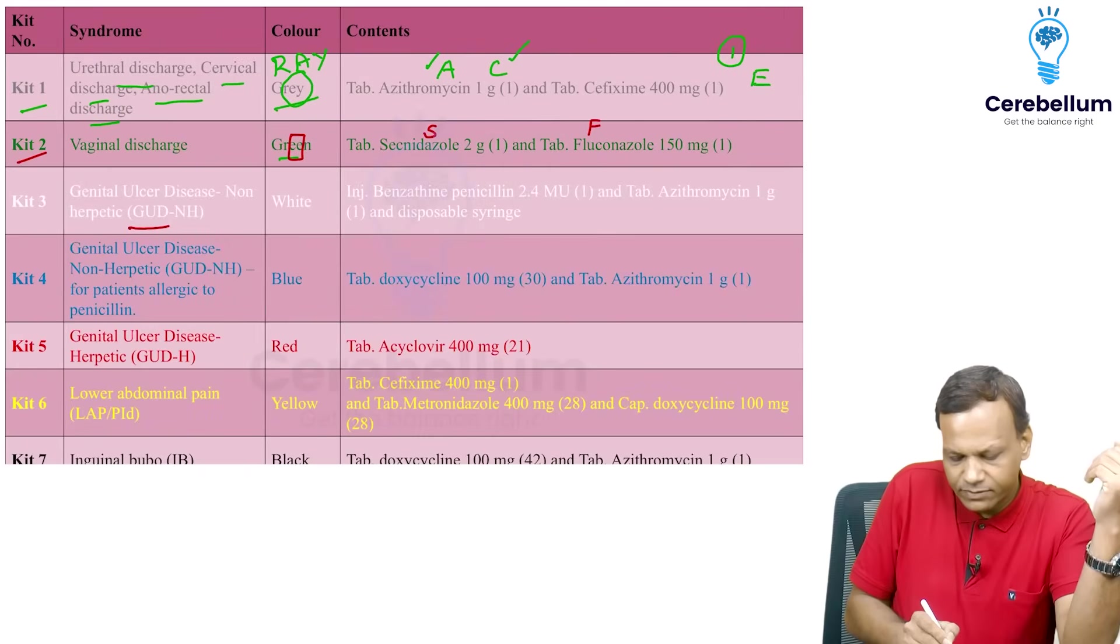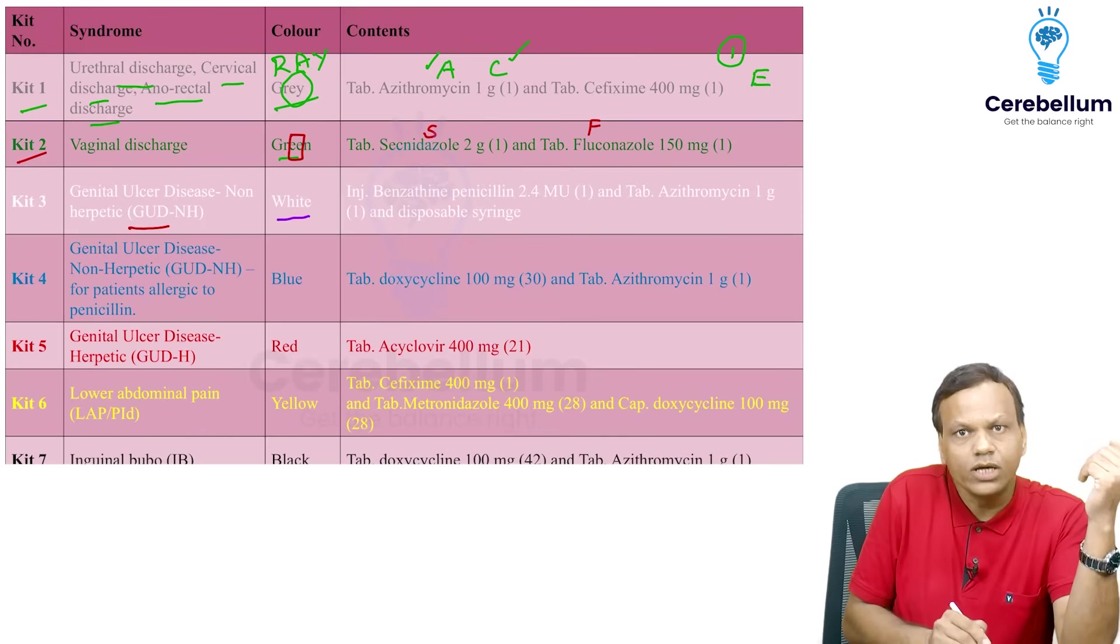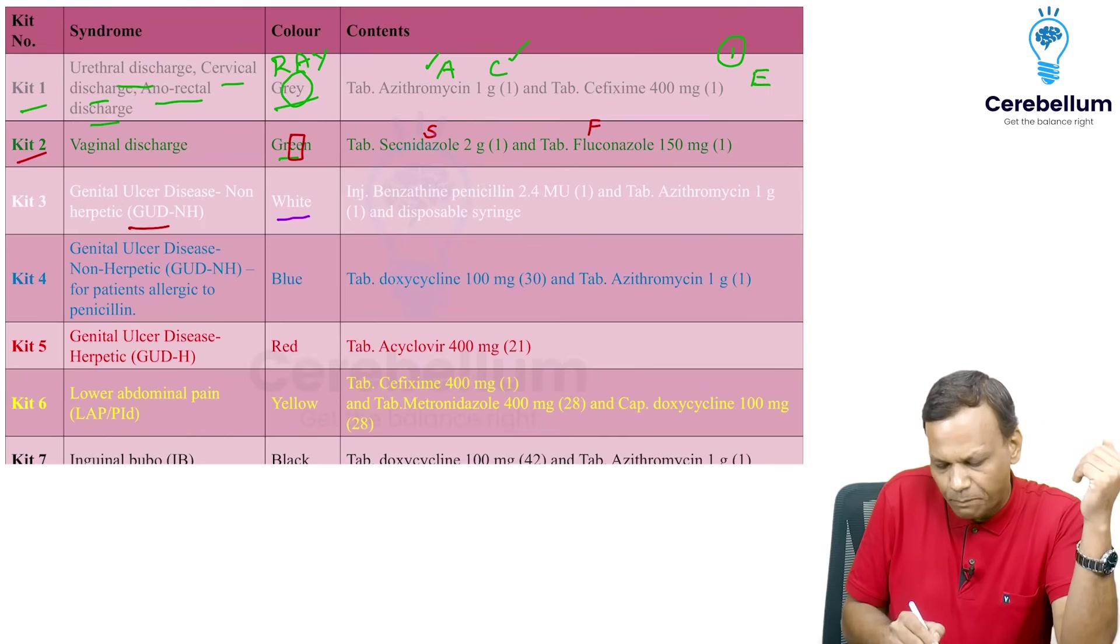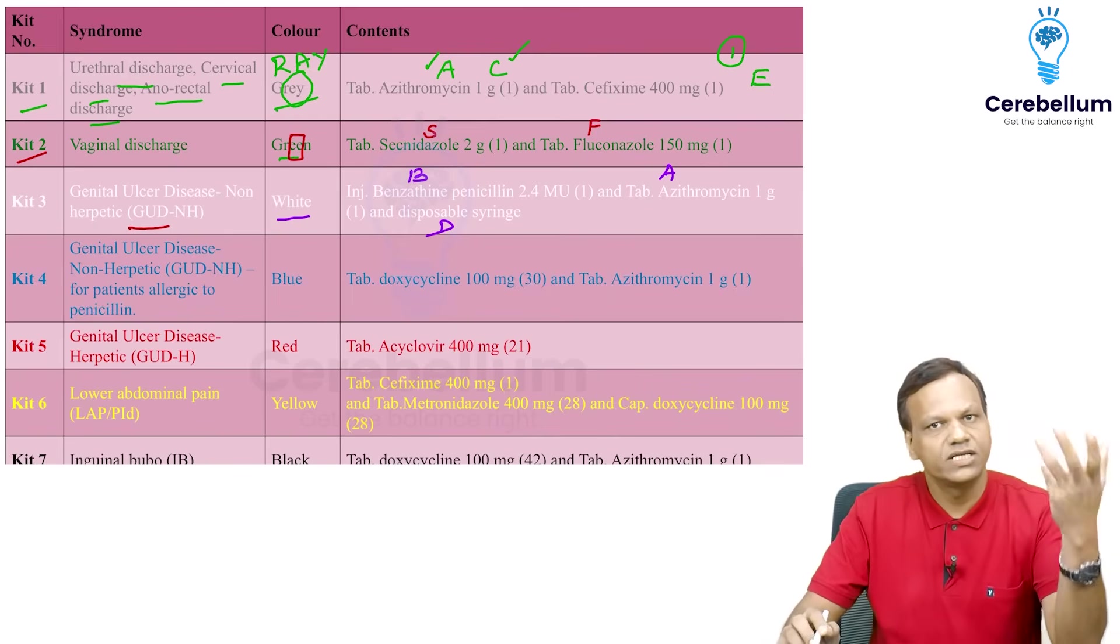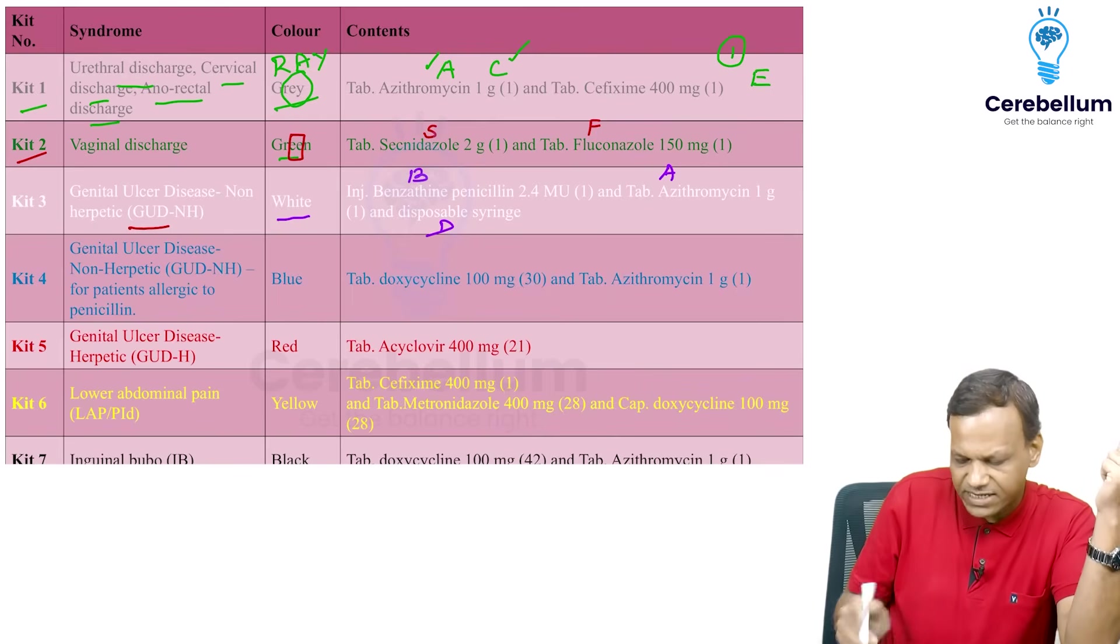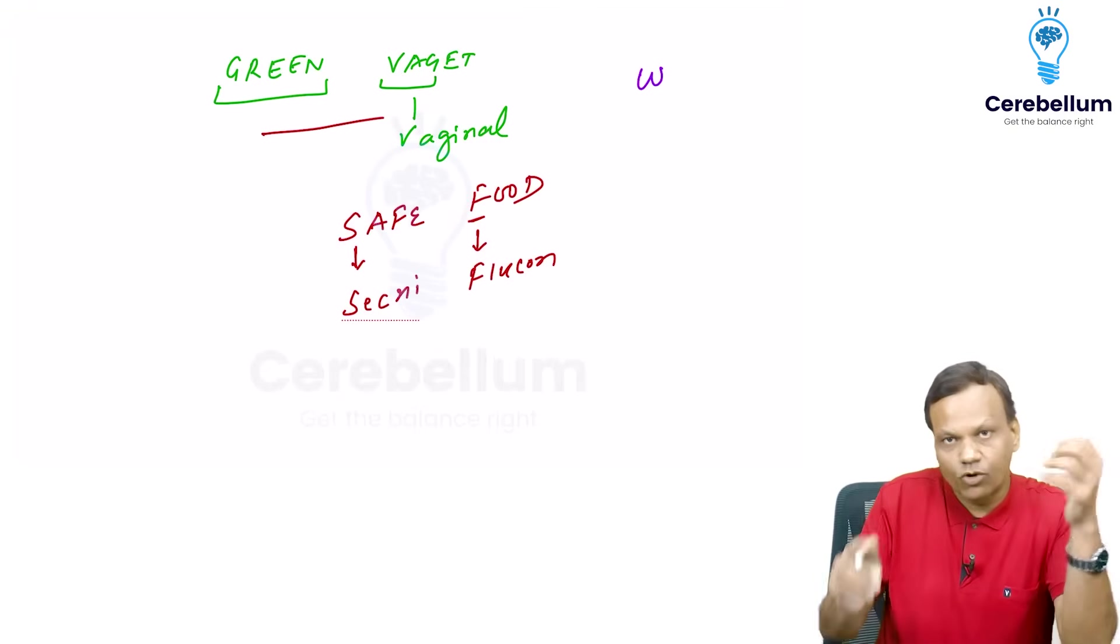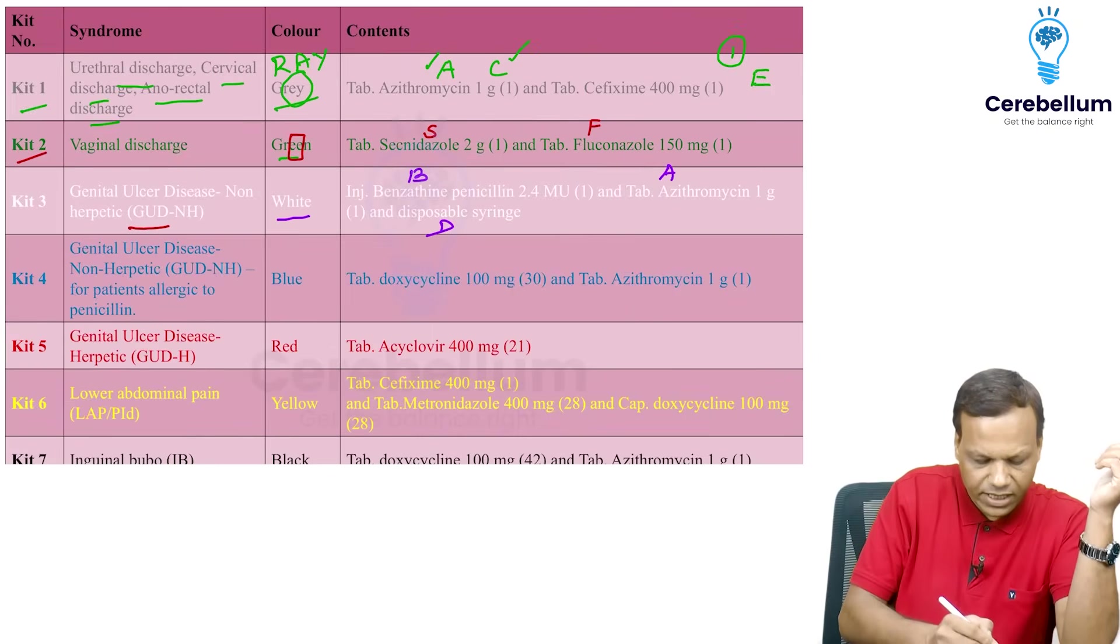So these are present in the kit bad. So remember white, it is a white kit. White is good. So it contains bad. Bad means benzathine penicillin G, azithromycin and disposable syringe with distilled water. So that is white. And you can remember white starts with W. So if we rotate the W, it will become three. So it is kit three.